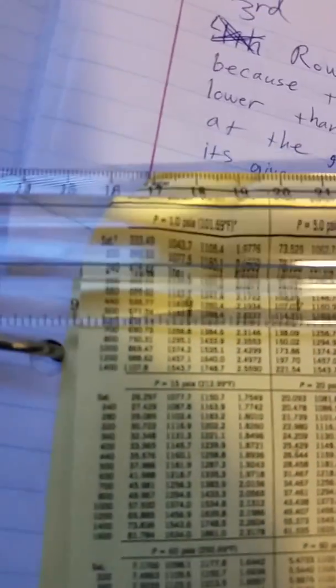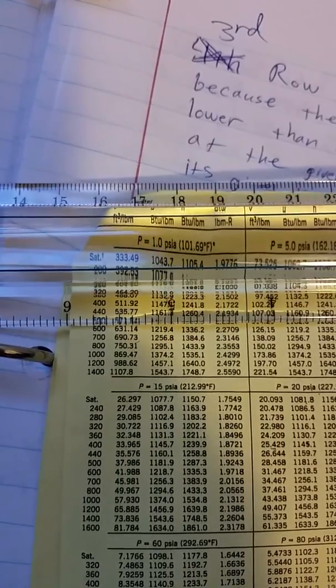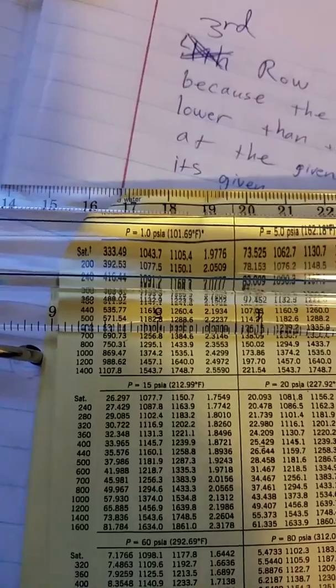At 1 psi, we see that the temperature at saturation gives a volume of 333.49, and then at 200 degrees, it's 392.53.